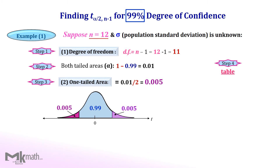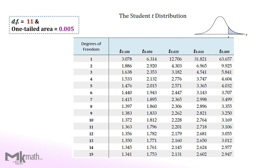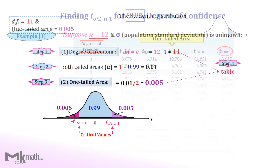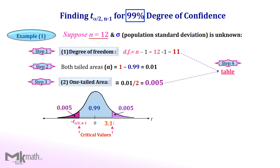Finally, look up the t-table using 11 degrees of freedom and a one-tailed area of 0.005. Locate 11 degrees of freedom and one-tailed area of 0.005 from the top row. Read the intersection to get the t-score of 3.106. Now we have the positive critical value 3.106, and we should also have the negative critical value −3.106. So the critical values are ±3.106 for the 99% confidence level with a sample size of 12.